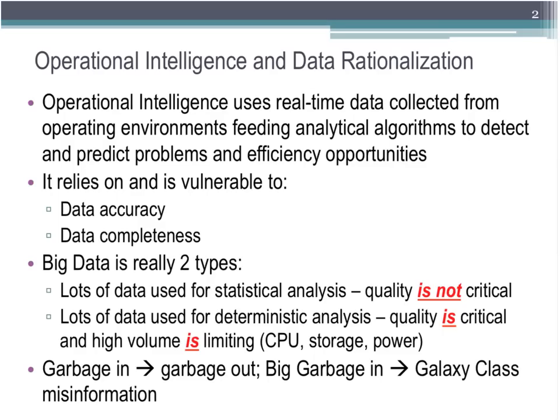Operational intelligence is a field that uses real-time data collected from the operating environment — in this case, IT — and that information in real-time feeds a variety of analytic algorithms trying to detect problems, predict problems, and find opportunities for efficiency. It is completely vulnerable to and dependent upon the accuracy and completeness of the data. Accuracy means how true the data is, traceable to an observable quantitative metric. Completeness means having enough data of enough different types for the algorithm to produce meaningful and trustworthy output.